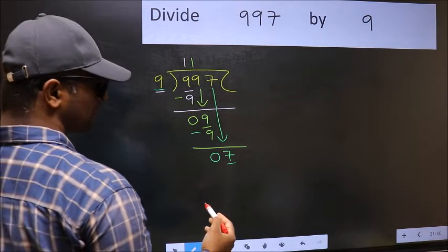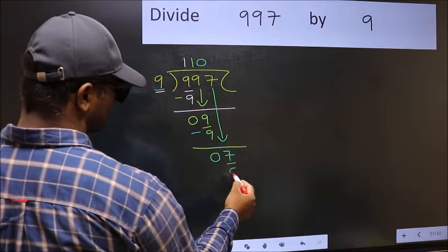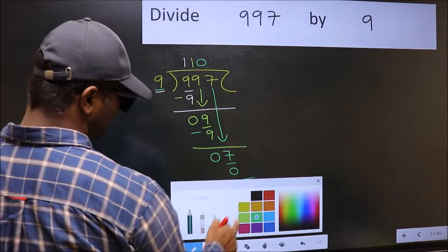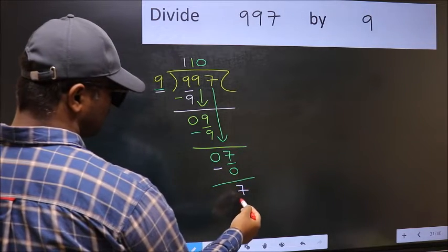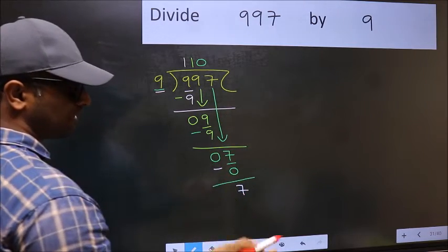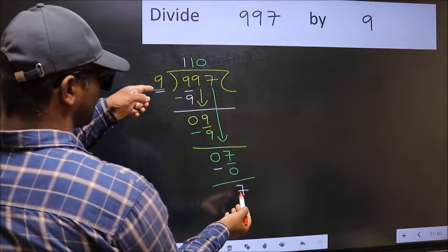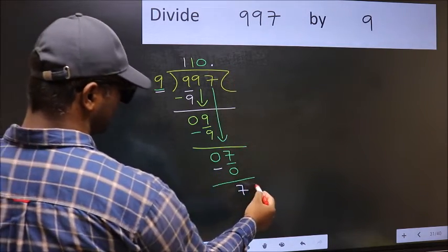But 9 is larger than 7. So what we should do is, we should take 0. So 9 into 0, 0. Now you should subtract. 7 minus 0, 7. Over here, we did not bring any number down. And 7 is smaller than 9.